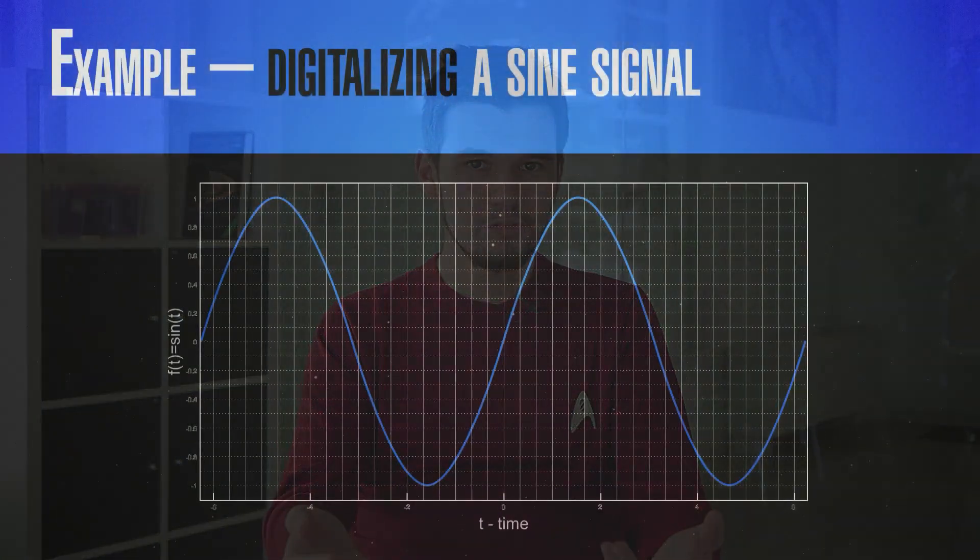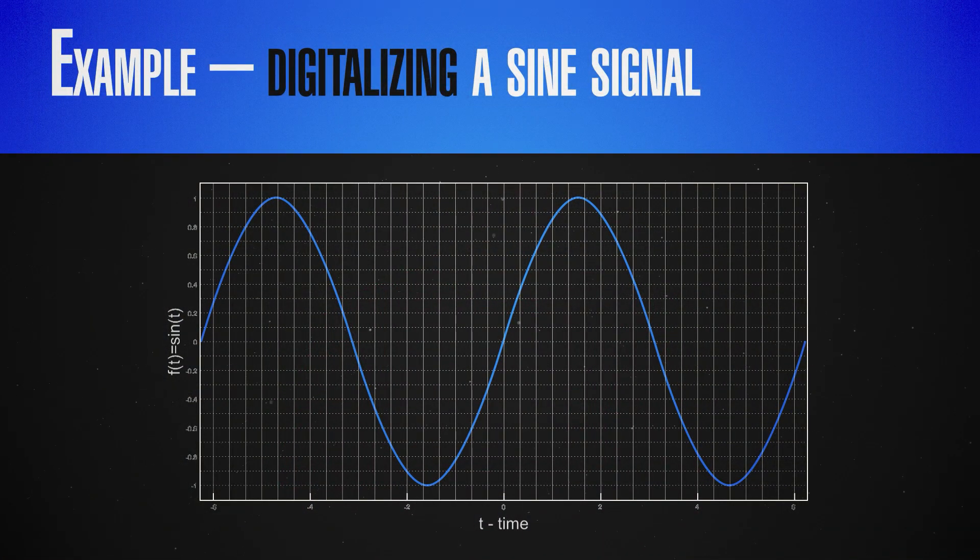A bit can be a zero or a one — equivalently, on or off, depending on how you define it. A total of n bits will carry 2^n possible states. Let's consider how we can transfer this sine function into bits, and turn this continuous function into a sequence of zeros and ones, which can then be used with digital modulation to be sent by a transmitter.